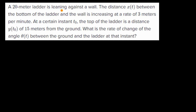A 20 meter ladder is leaning against a wall. The distance x(t) between the bottom of the ladder and the wall is increasing at a rate of three meters per minute. At a certain instant t sub zero, the top of the ladder is a distance y(t₀) of 15 meters from the ground. What is the rate of change of the angle theta(t) between the ground and the ladder at that instant?